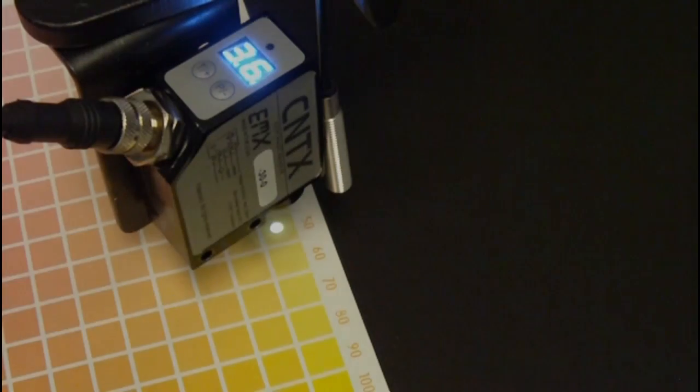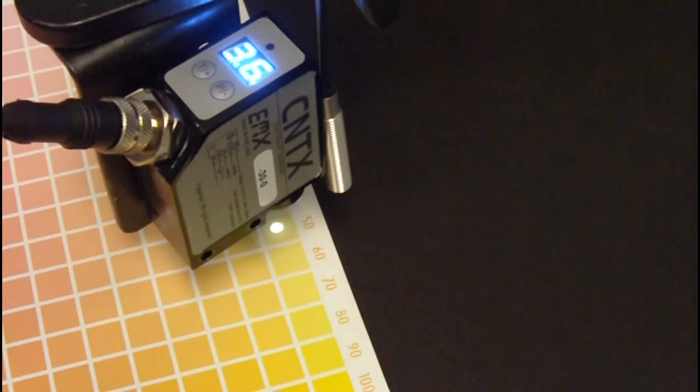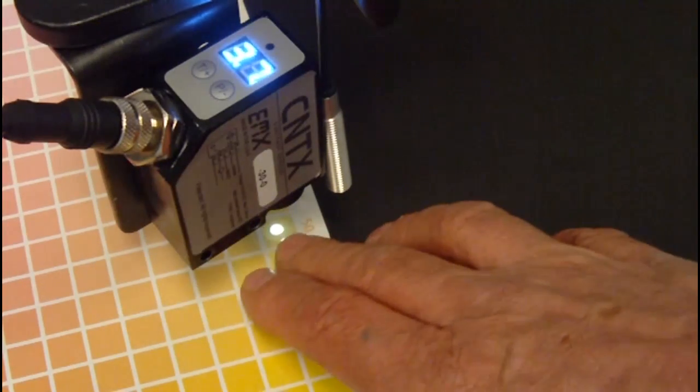This is a brief demonstration of the CNTX-30-0 contrast sensor from EMX Industries. The sensor features a 3mm light spot.